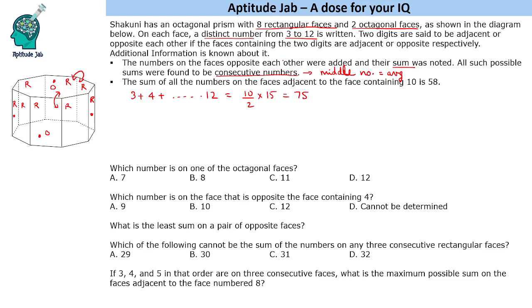There will be 5 pairs of opposite faces with consecutive sums. The middle number is the average: 75 divided by 5 is 15. So we take one value lower and one higher on each side, giving us sums of 13, 14, 15, 16, and 17.